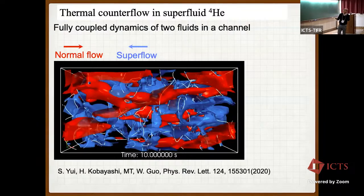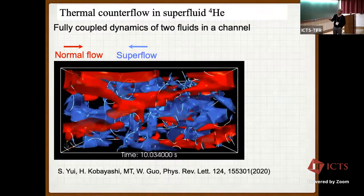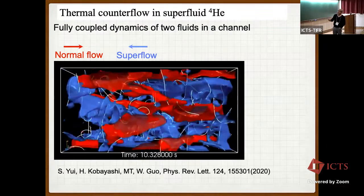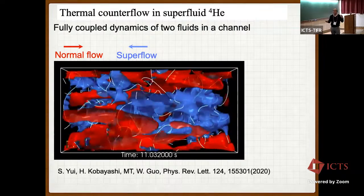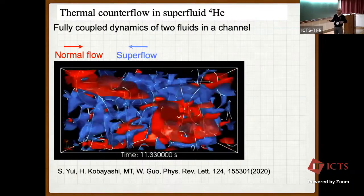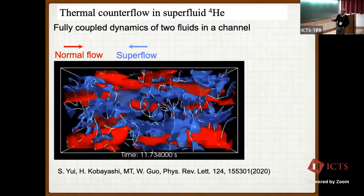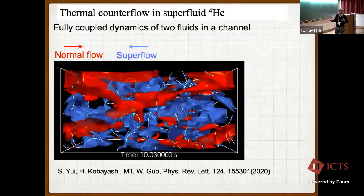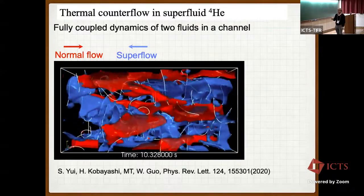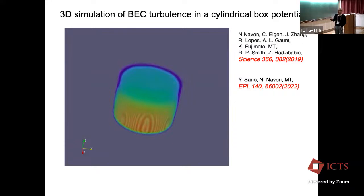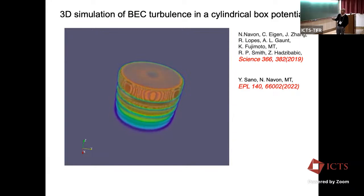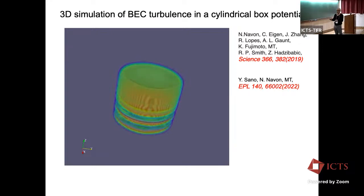This is a result reserved for superfluid helium that I show in this talk. This is thermal counterflow in superfluid helium — a fully coupled dynamics of two fluids in a channel. The white lines show the motion of quantized vortices by the Biot-Savart law, solved simultaneously with the Navier-Stokes equation. The red and blue parts show the motion of the normal fluid. This is also a 3D simulation of BEC turbulence in a cylindrical box potential, such as realized by the Cambridge group of Navon and the Hadzibabic group.